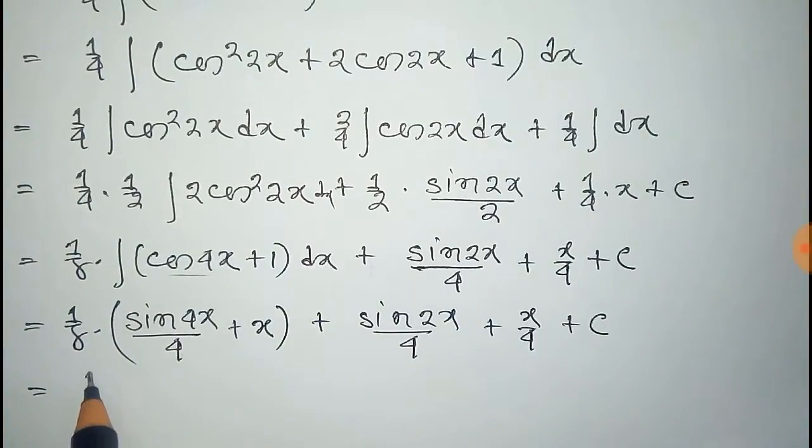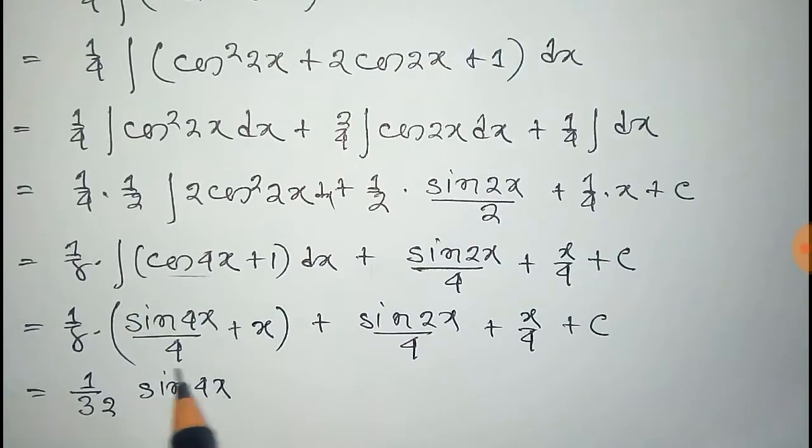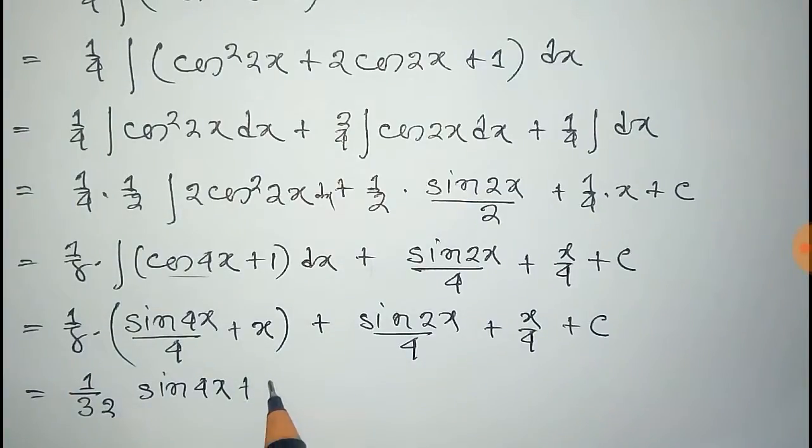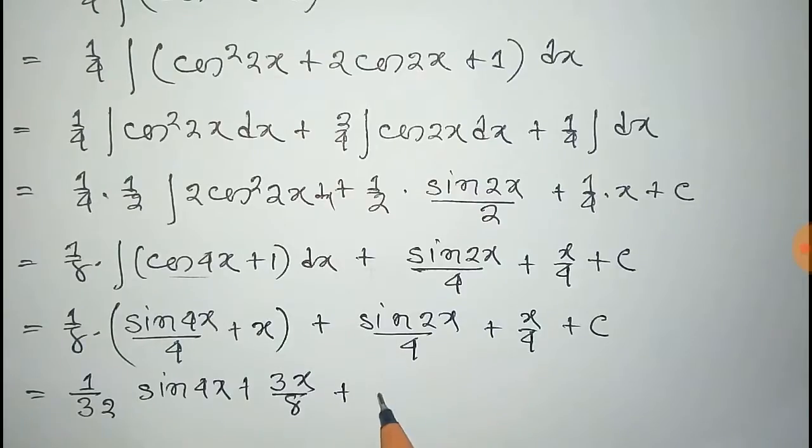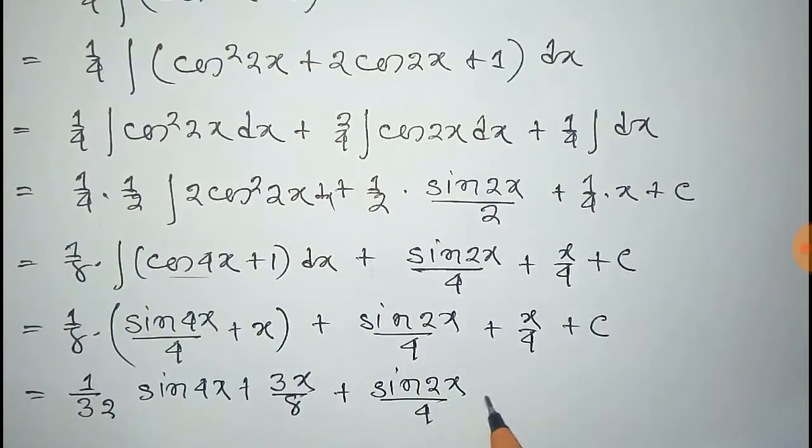Now this equals sin 4x by 32, and this x by 8 and this x by 4 makes 3x by 8 plus sin 2x by 4 plus constant c.